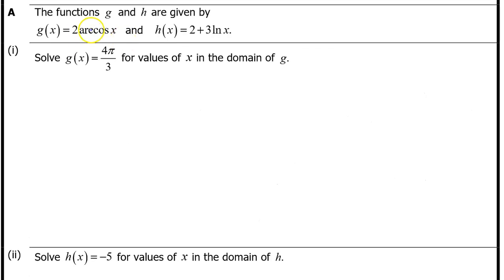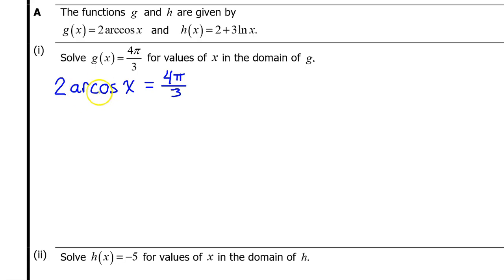In Part A, functions g and h are given by these expressions. A Part 1: Solve g of x equals 4π over 3 for values of x in the domain of g. We need to set g of x equal to 4π over 3 and solve. To isolate the arc cosine x, we can multiply both sides by one-half.